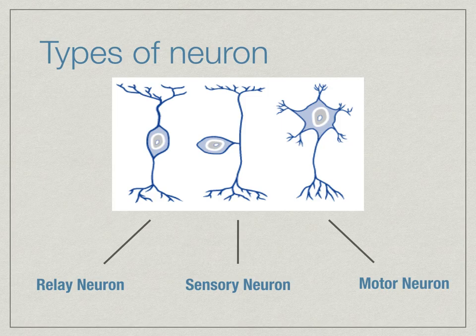The relay neuron connects sensory neurons to motor neurons, or also to other relay neurons — they are connecting neurons. Motor neurons connect your central nervous system to effectors, such as muscles and glands. Motor neurons bring about the response to the stimulus by the time the impulse gets there.